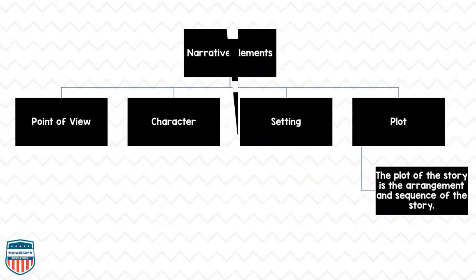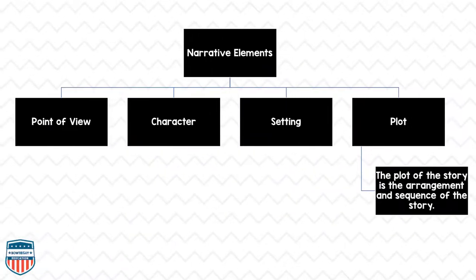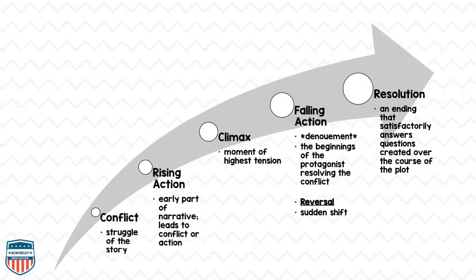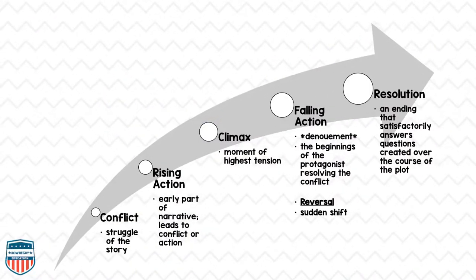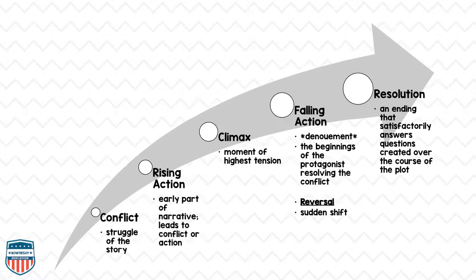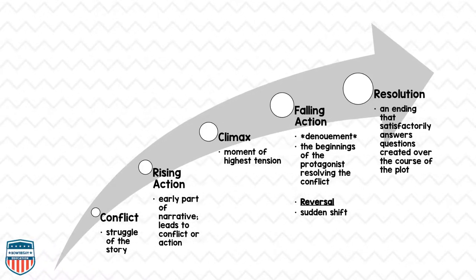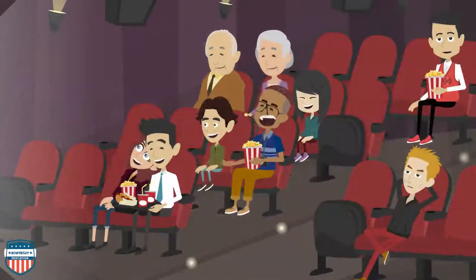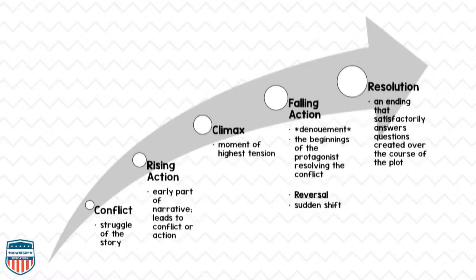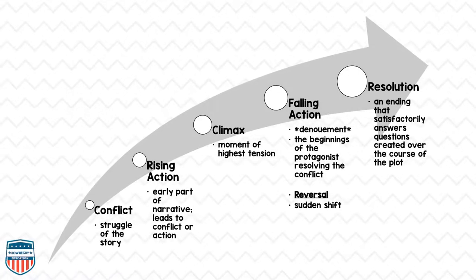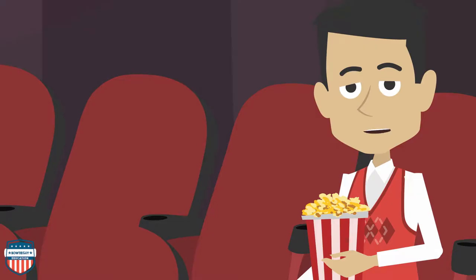Now let's discuss plot. Conflict is the struggle within the story. The rising action is the early part of the narrative that leads to the conflict or action. The climax is the moment of highest tension. The falling action, or denouement, is the beginnings of the protagonist resolving the conflict. A reversal is a sudden shift. And the resolution is an ending that satisfactorily answers the questions created over the course of the plot.